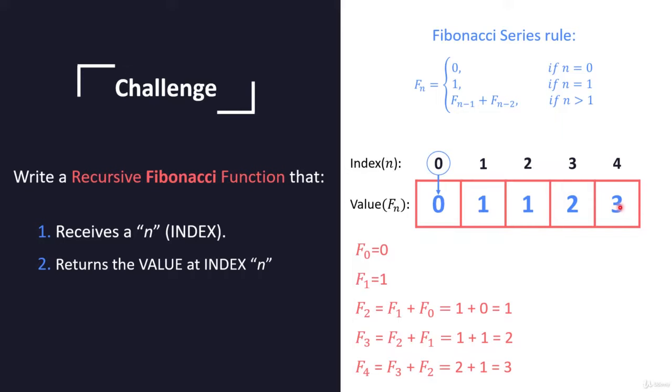What you have to do is write a recursive Fibonacci function that will get some n, some index, and it will find out and return the value at index n. If it receives an index of three, if n equals three, then the function is going to return two.